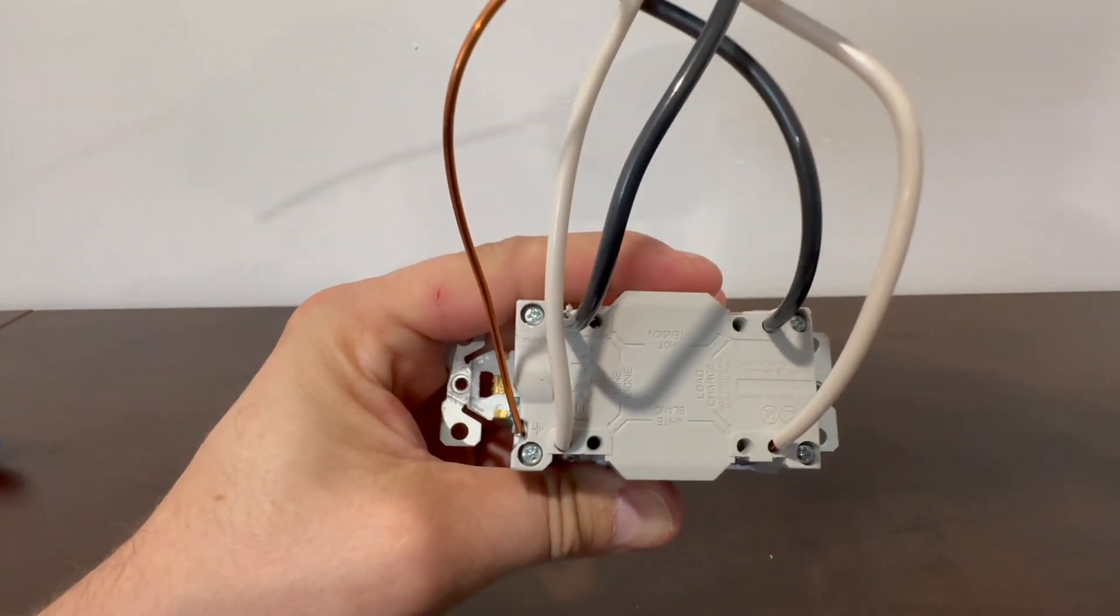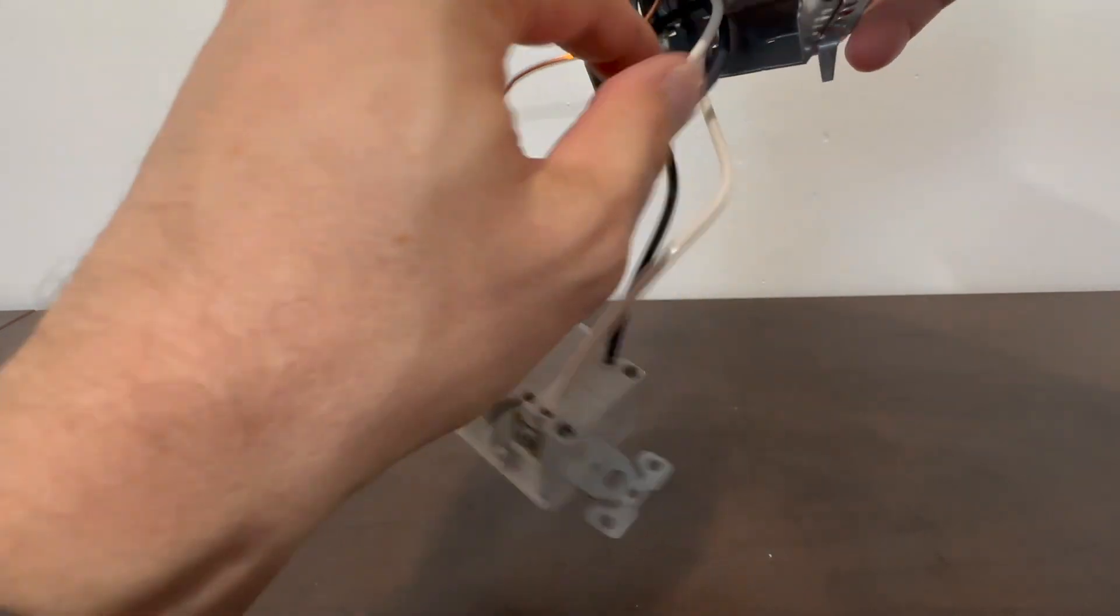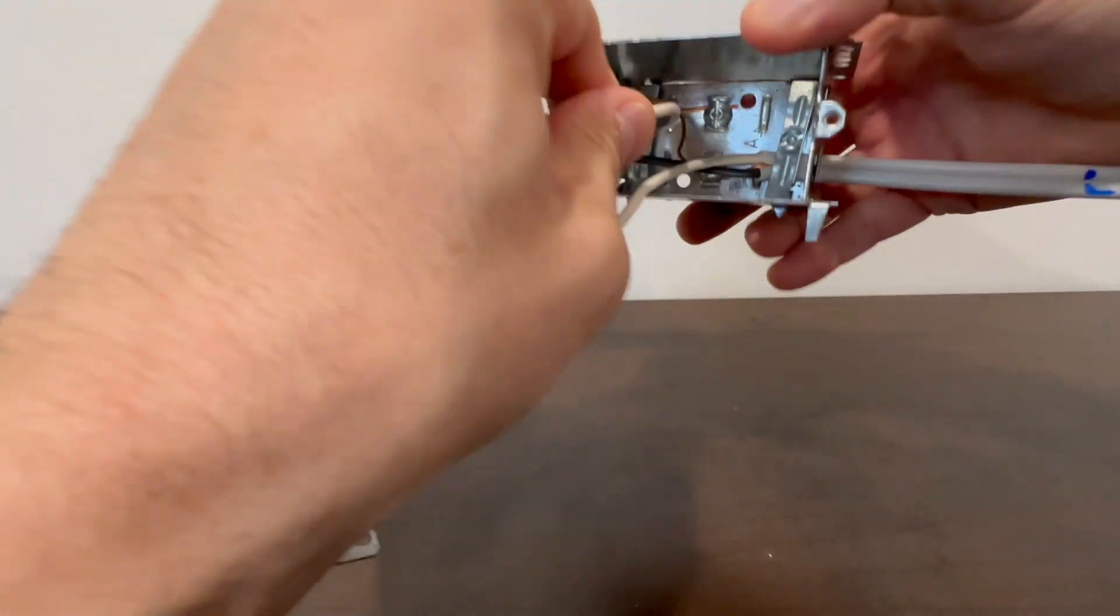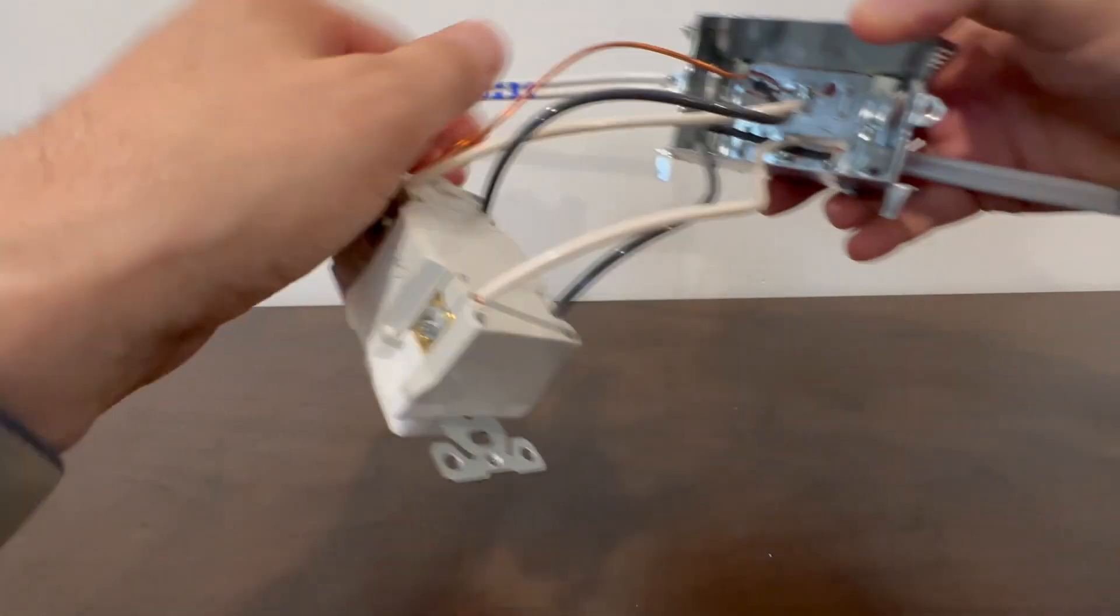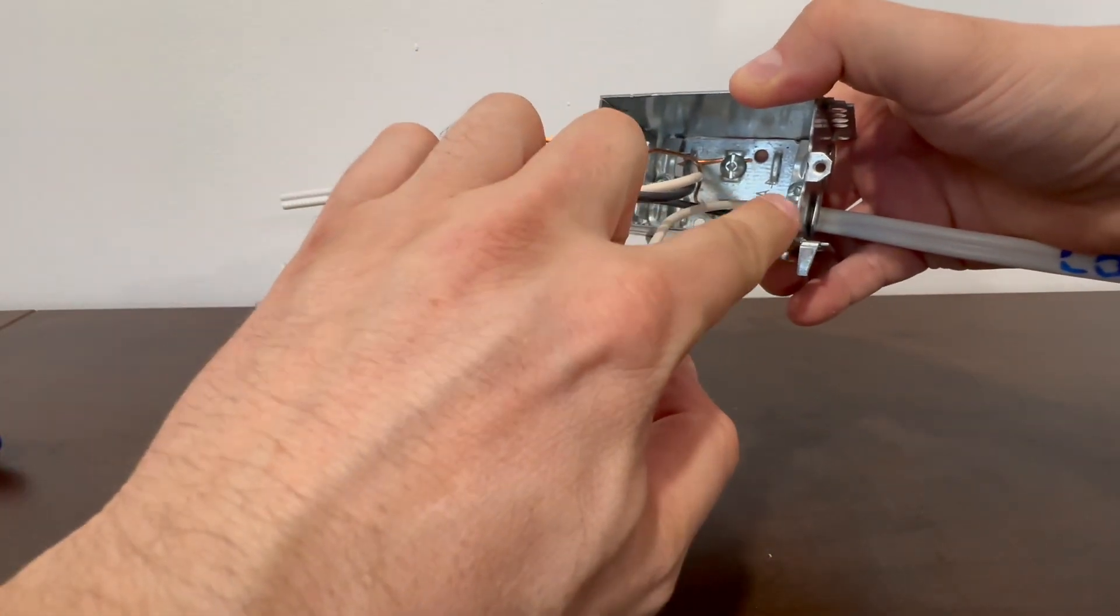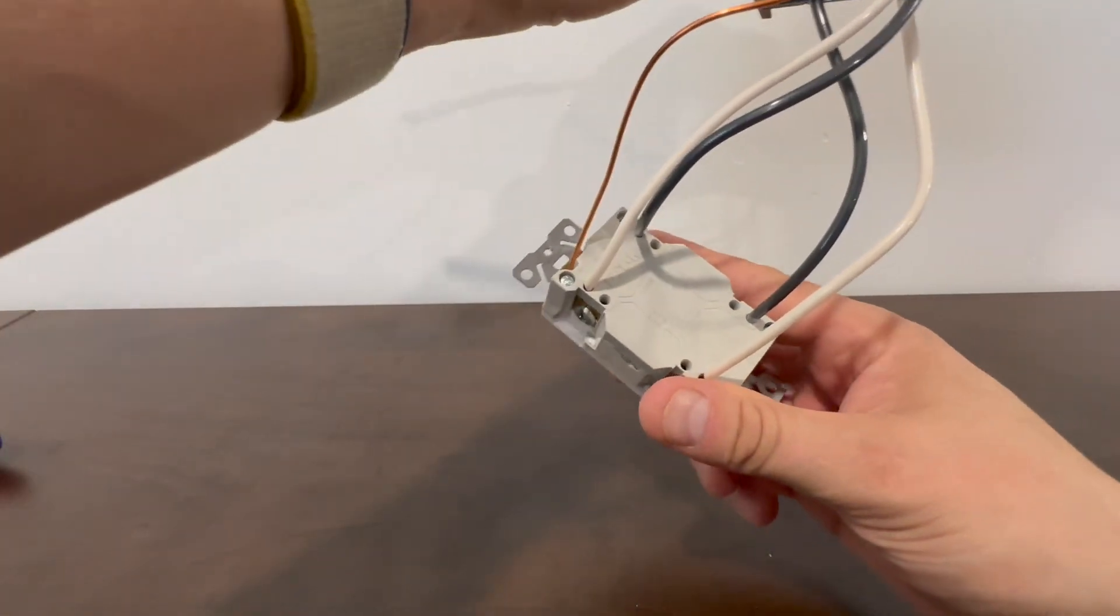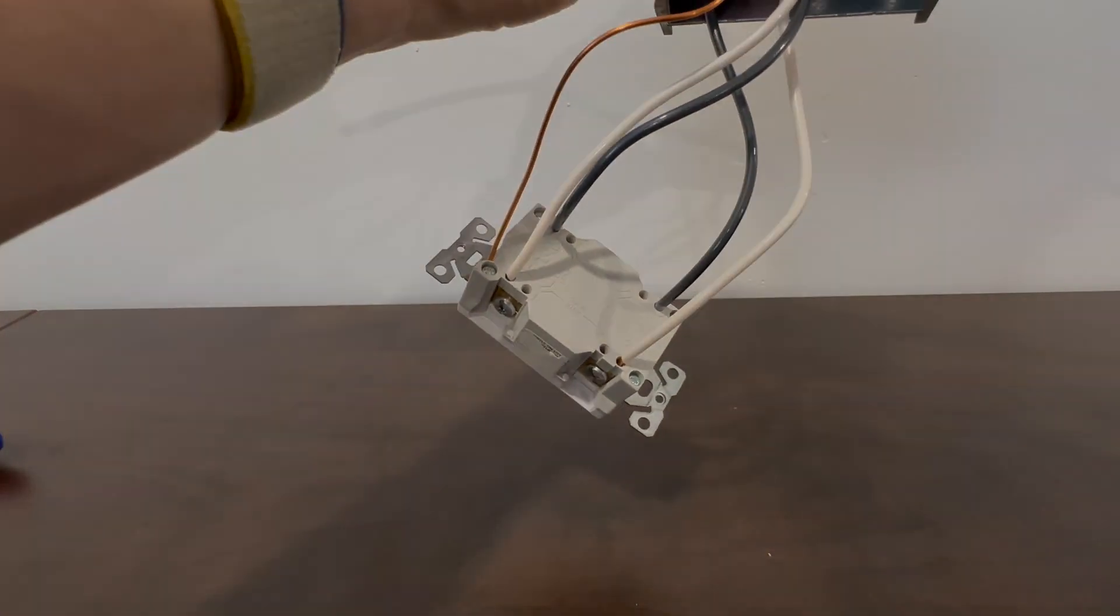If we take a look at the back now, we can see you have your line and load. And if you fall back, your line comes to your line side which is right here and your load which would be on this side here. If you fall back in the back of the box, comes around there to your load wire. And that right there is how you hook up a GFCI receptacle.